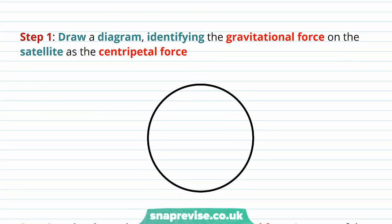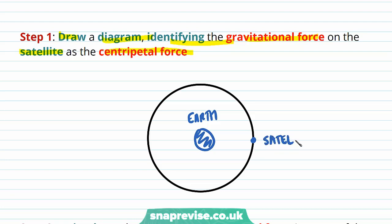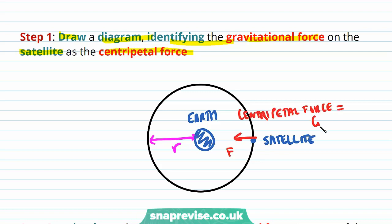Step 1 is to draw a diagram identifying the gravitational force on the satellite as the centripetal force. So we draw the Earth in the centre and the satellite orbiting around it. We can draw on the radius of orbit of the satellite and the centripetal force, which arises from the gravitational force between the Earth and the satellite.